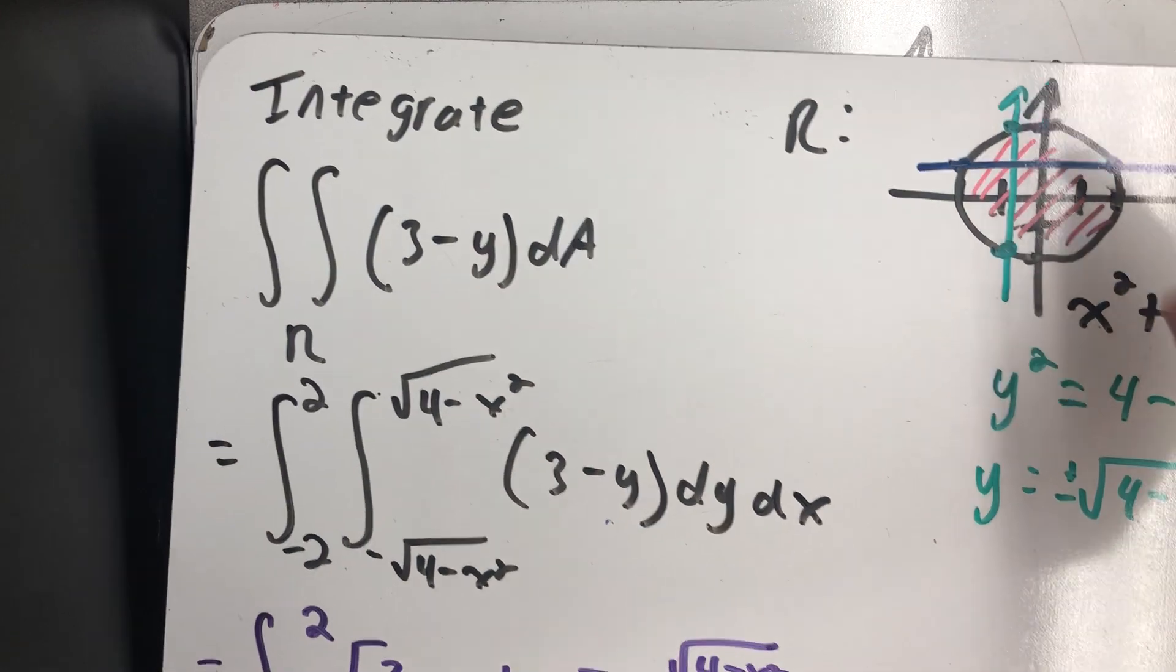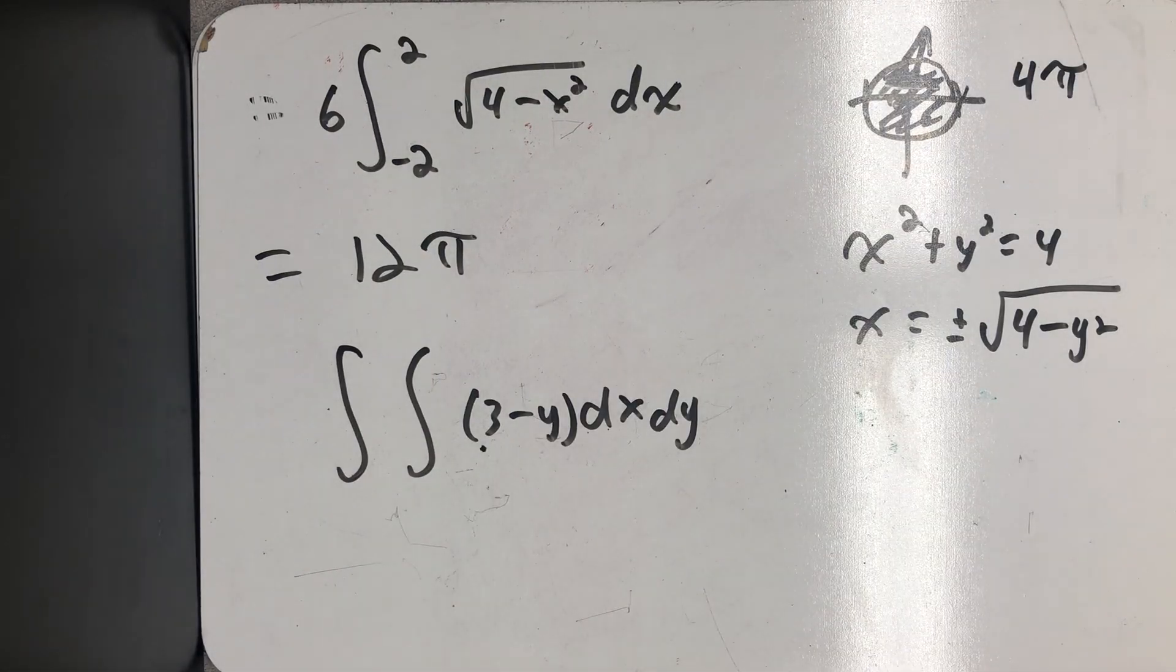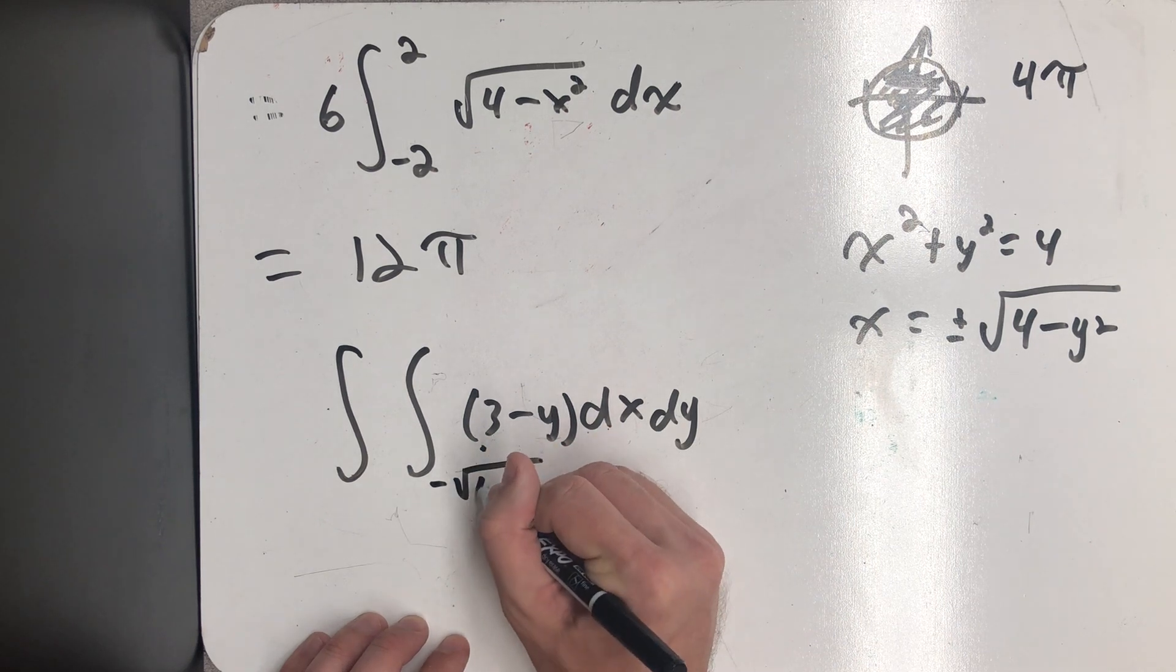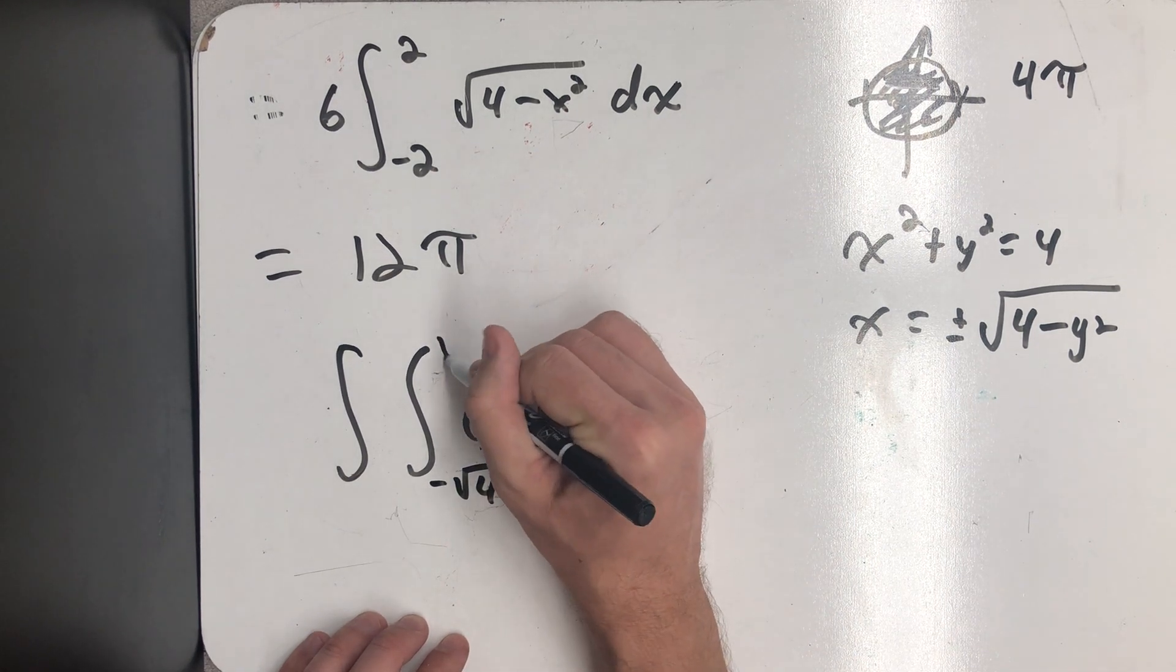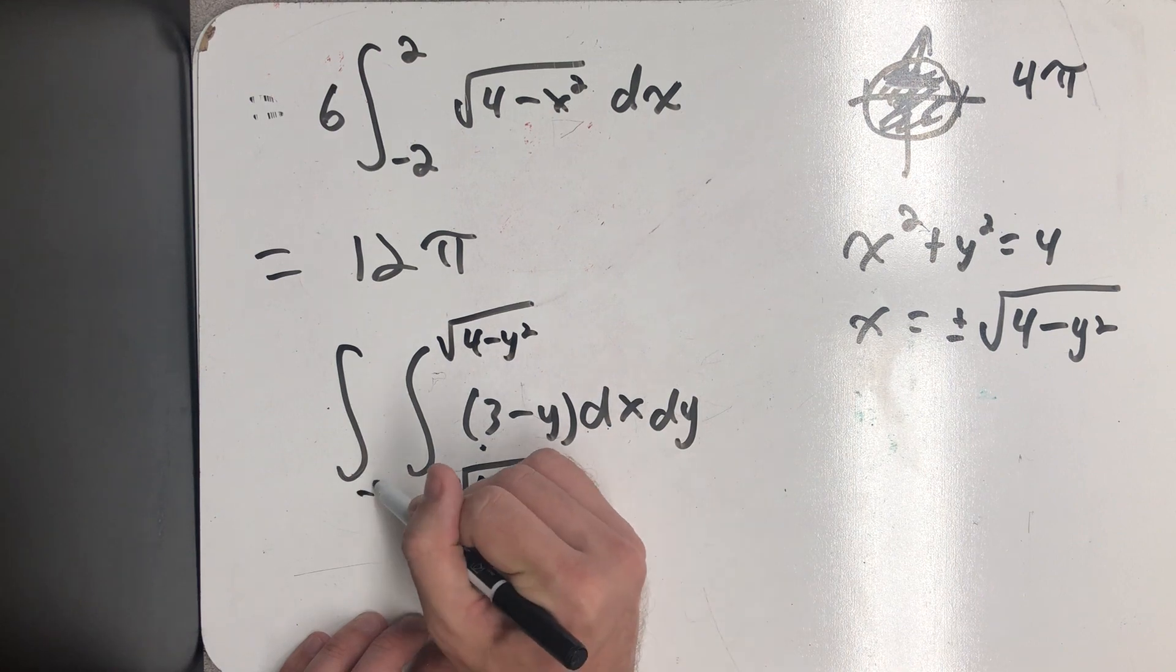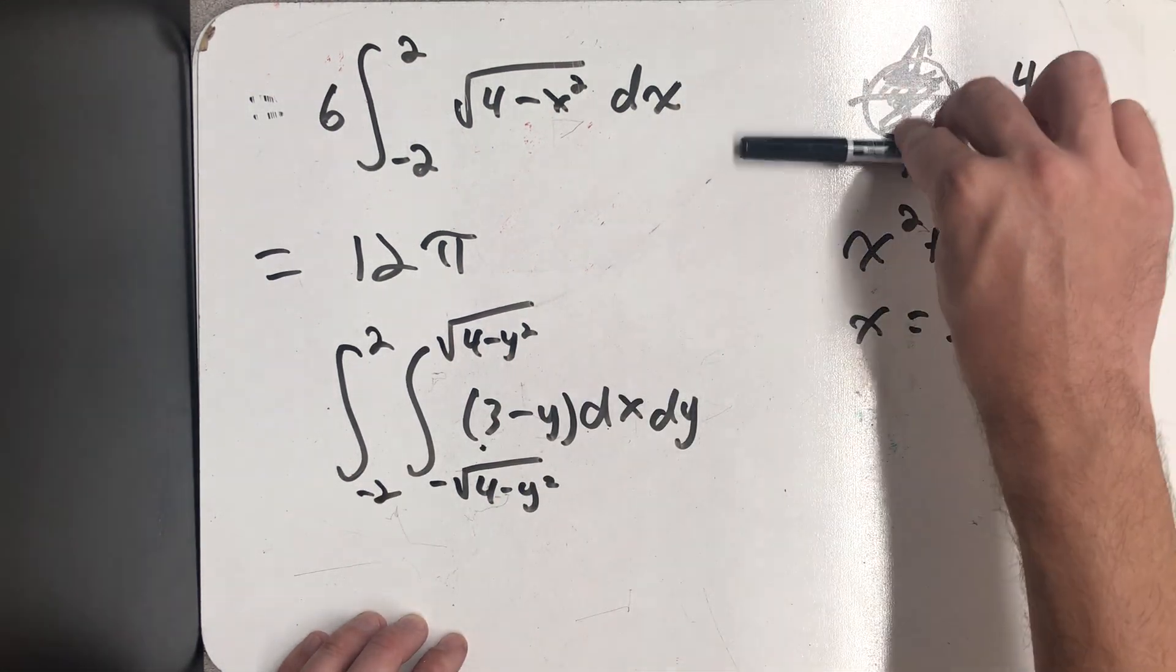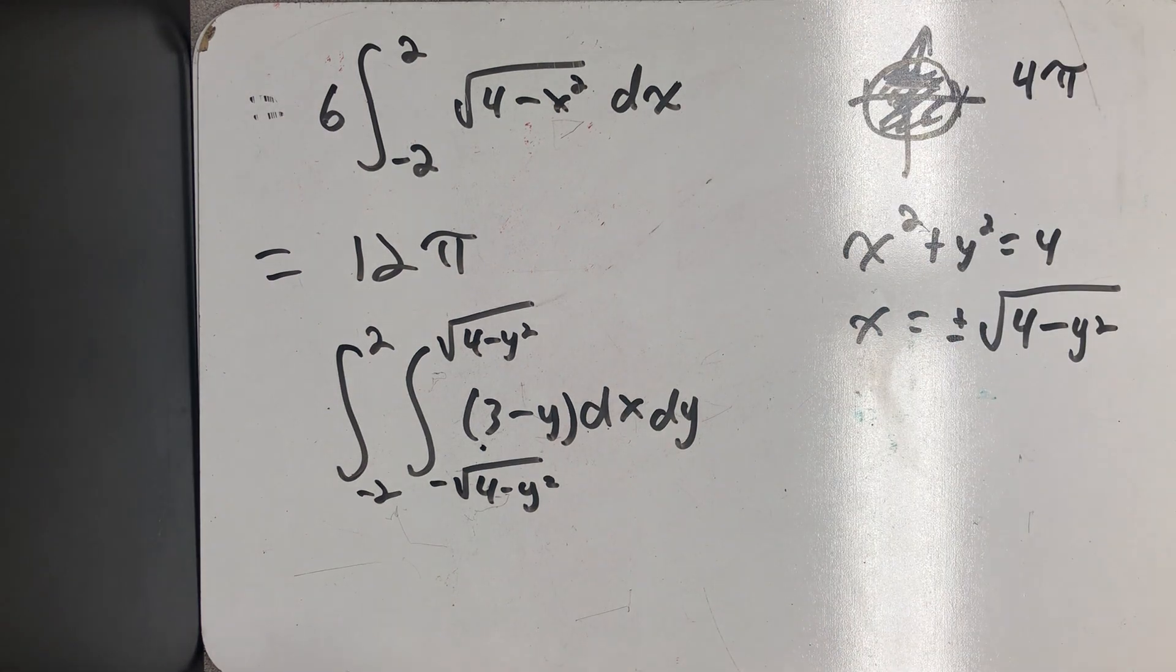and then the one where all the x's are positive. And then the bounds that would include all such rays from minus 2 to 2 with respect to y.